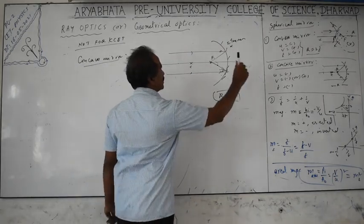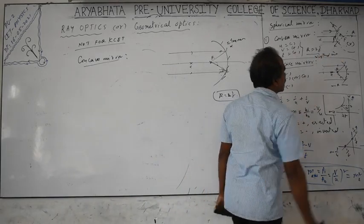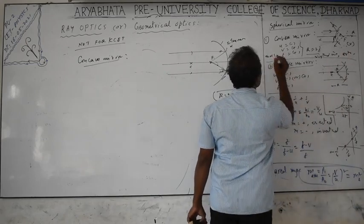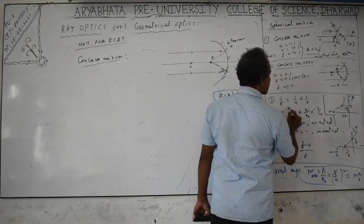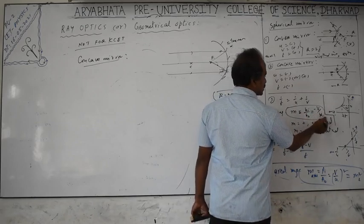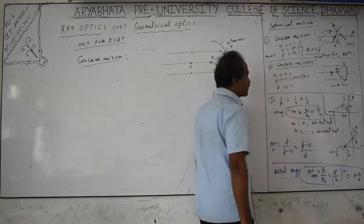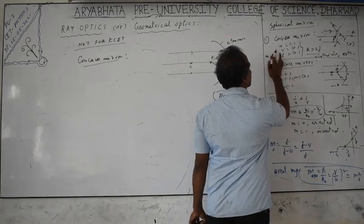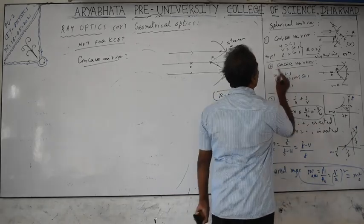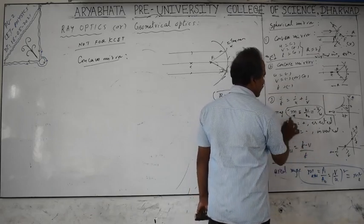For a convex mirror, images are always virtual, always erect, and always diminished — magnification is less than 1. Magnification formula: m equals height of image divided by height of object. It also equals minus v divided by u, where v is image distance and u is object distance. This is called linear magnification. For a convex mirror, magnification is always less than 1 and positive, meaning an erect image.